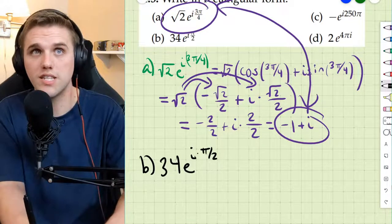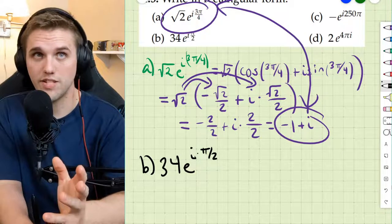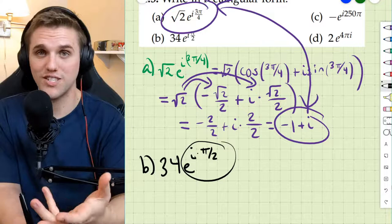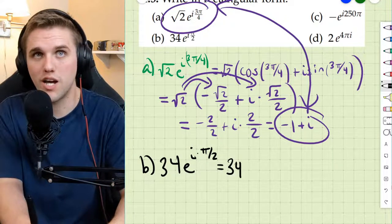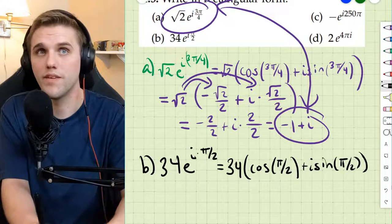So this is 34e^(iπ/2). Now, again, we're just going to use the definition of e^(iφ) to convert this entire complex number into its rectangular form. So this is 34 times cosine of π/2 plus i sine π/2. And then we simplify.